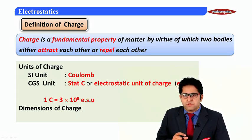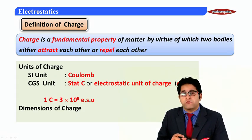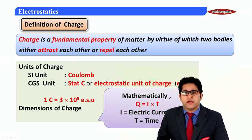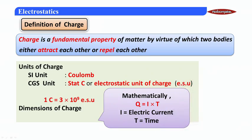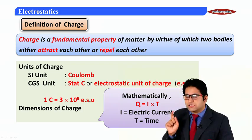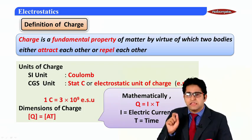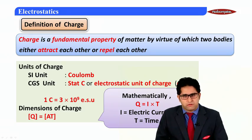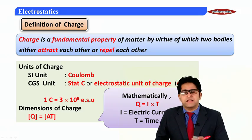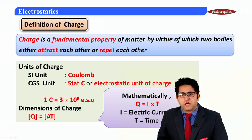Now let us write the dimensions for charge. The formula for charge is Q = IT, where I is electric current and T is time. Using this formula, I can write the dimensions of charge as A¹T¹.